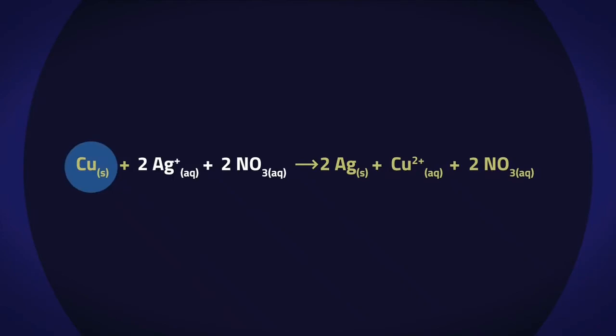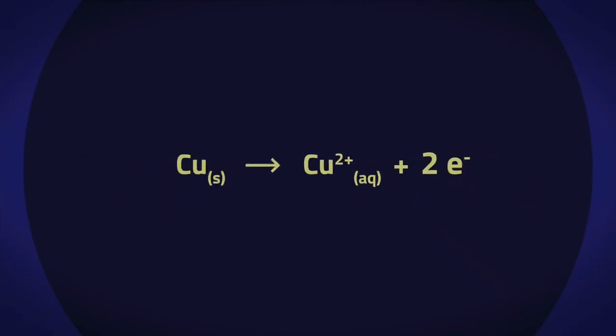The copper metal has been oxidized because it has lost two electrons to form Cu2+ ions. If we take out this half-reaction, we now have a half-equation.